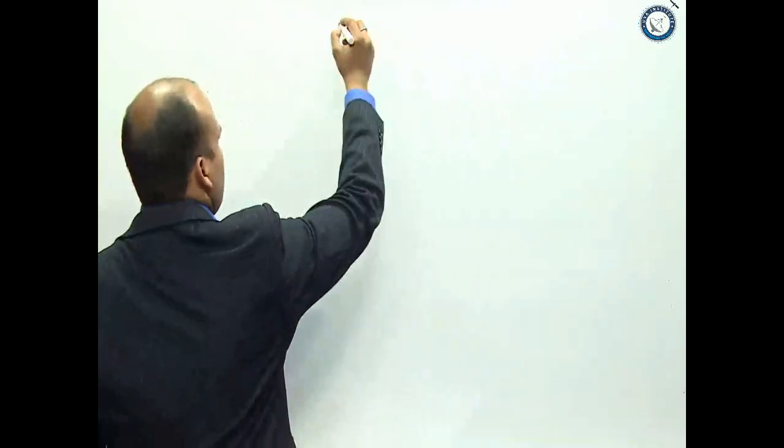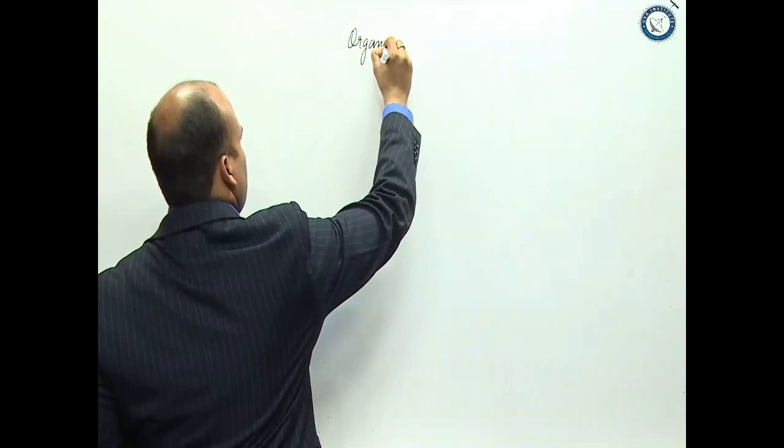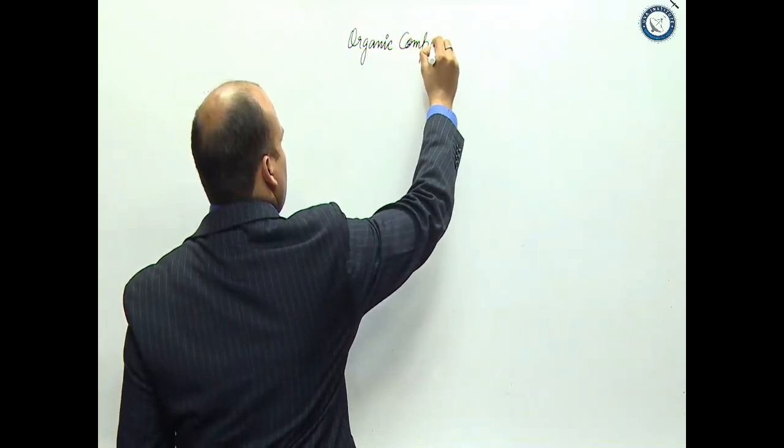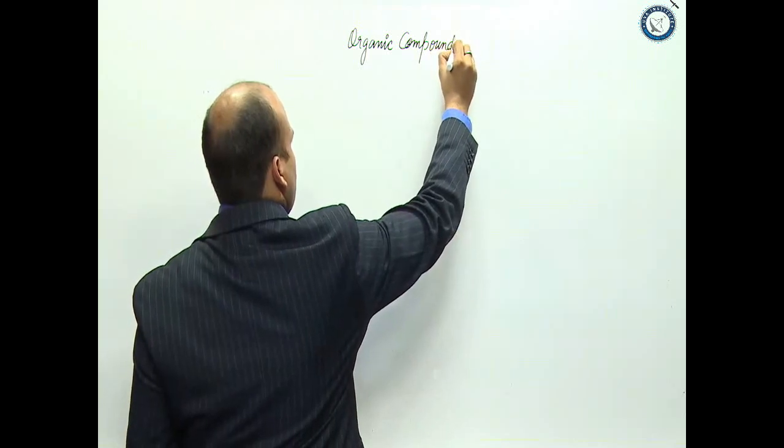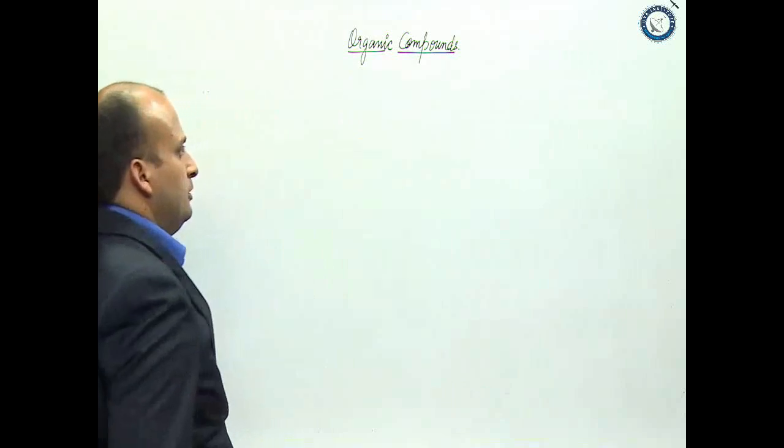Now, let us talk about the classification of organic compounds. In organic compounds, it is basically carbon which is the skeleton.